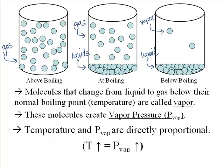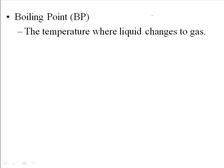As temperature goes up, vapor pressure goes up. Let's look more closely at the transition from liquids to vapors and gases. For any substance, there is a boiling point — also called boiling temperature. All substances change from liquid to gas at the boiling point, abbreviated BP. It's the temperature where the liquid turns entirely into gas. There are still vapor molecules over the liquid at all times, but at the boiling point, all molecules attain the energy needed to turn into gas.